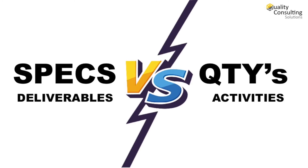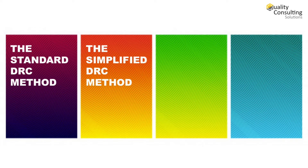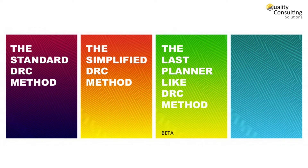Completion estimation is primarily based on requirements achievement instead of quantities, and focuses on deliverables rather than on activities. There are three variations of the method: the standard method, the simplified method, and the last planner-like method.